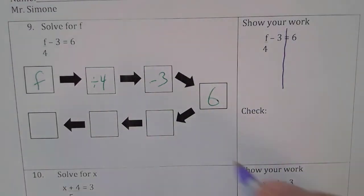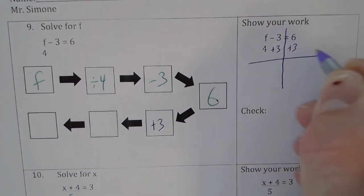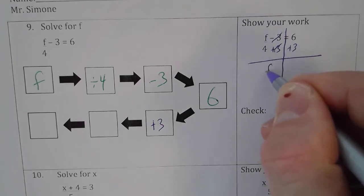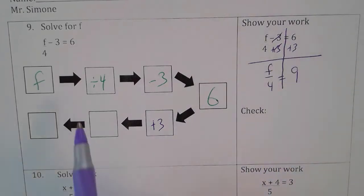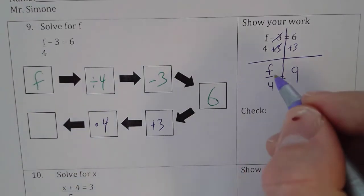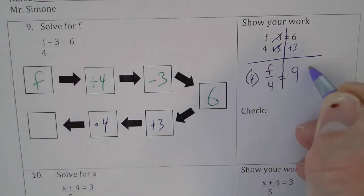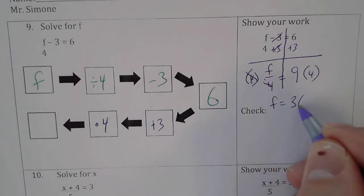So step 1, we get to add by 3. So I'm going to add by 3 on this side. I end up with f over 4 equals 9. Next step, undoing division of 4. We have to multiply by 4, so we're going to multiply by 4 on both sides. f is equal to 9 times 4, which is 36.